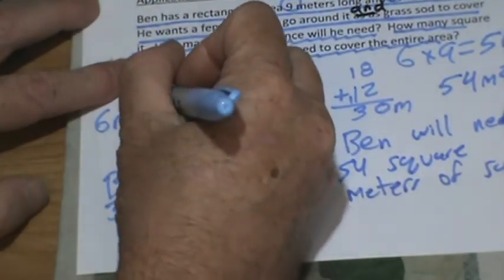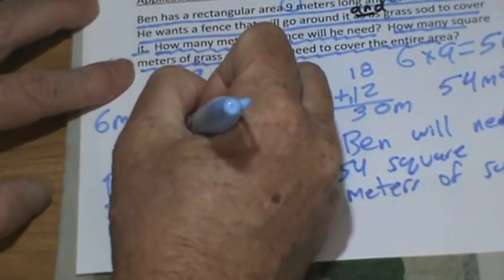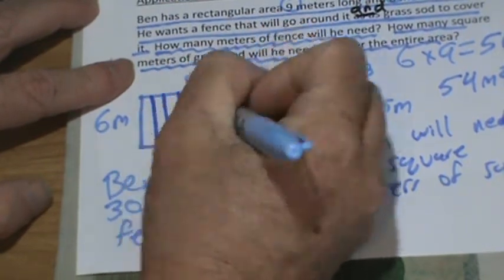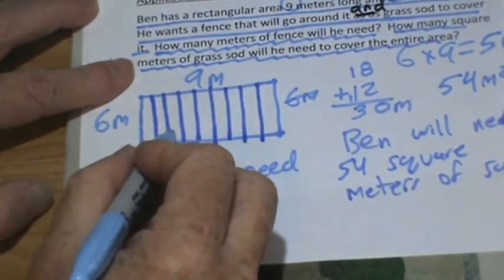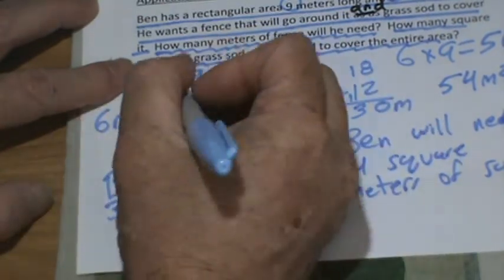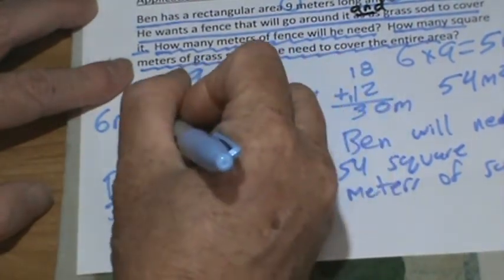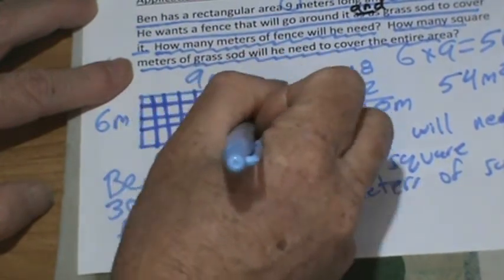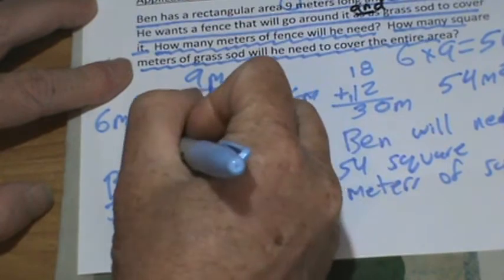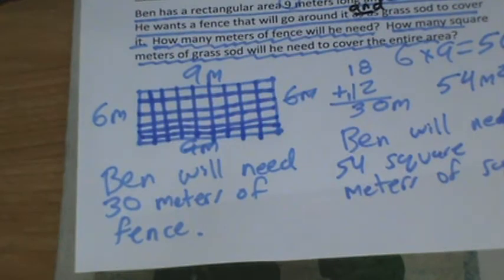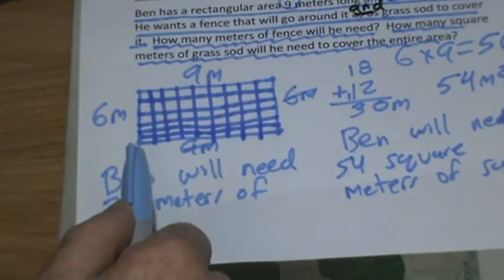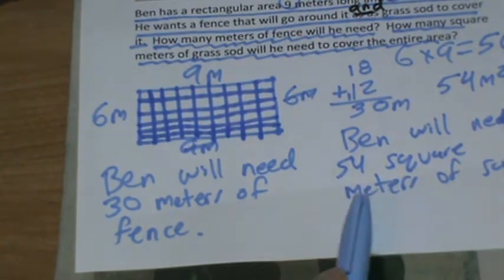Why it's called square meters — I love showing this. I'm going to draw nine lines this way and you can go along with me. One through nine. So we have nine lines. And then we'll do six across. How many total squares do you think we have? We have 54 square meters. So Ben will need 30 meters of fence to go all the way around his area, and Ben will need 54 square meters of sod to cover that all up.